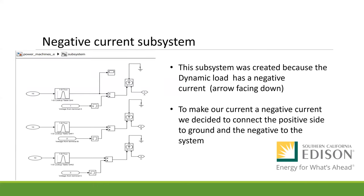Here we have our negative current subsystem. The purpose of this subsystem was the same as the purpose of the power to current block. However, the controlled current source in this model was made to give off a negative current. To make our current a negative current, we decided to connect the positive side to ground and the negative to the system. We figured since there wasn't a way to change the direction of the current block, this would be the next best thing. This subsystem was for the dynamic load, which needed a negative current to go through it.